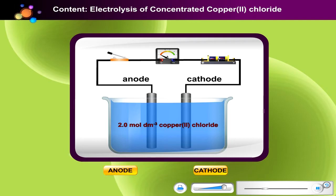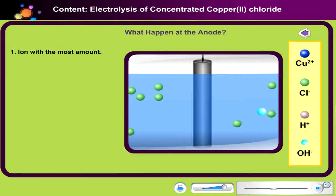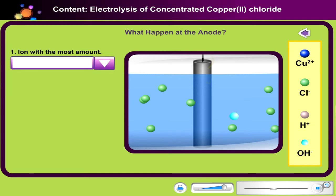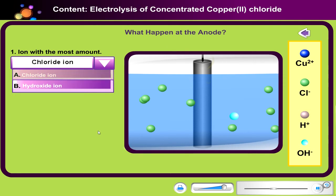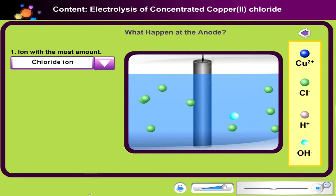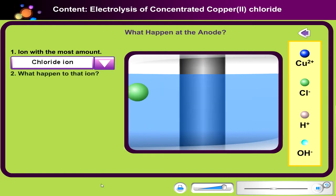Click at the anode or cathode button to see what happens at the electrodes. Now, look closely. Can you name the ion with the most amounts? Click the drop-down menu to select your answer. There are more chloride ions than hydroxide ions in the electrolyte. As the switch is closed, all anions move towards the anode. Since chloride ions are more than hydroxide ions, chloride ions will be selectively discharged at the anode. What happens to chloride ions at the anode? Click the drop-down menu to select your answer.